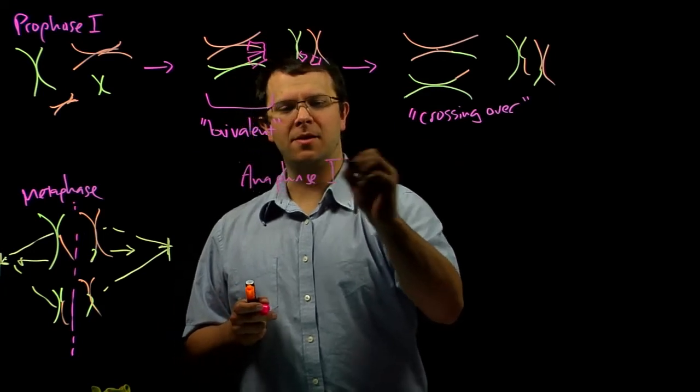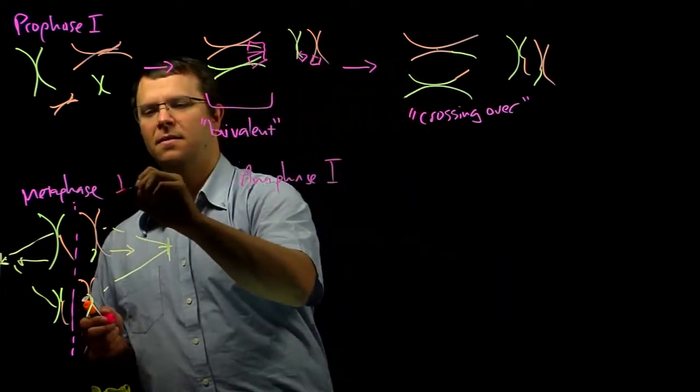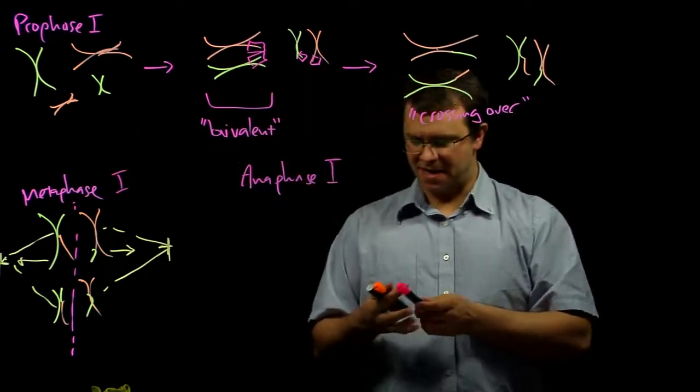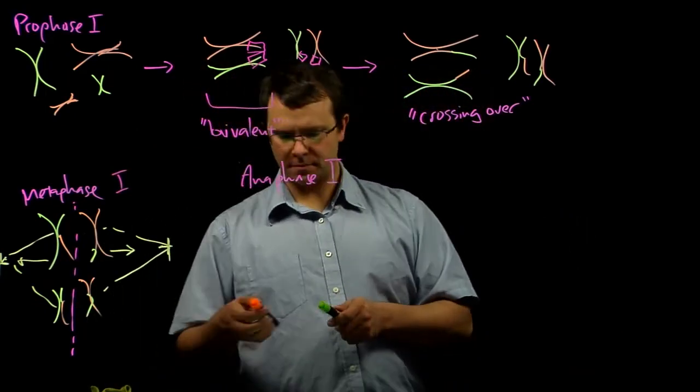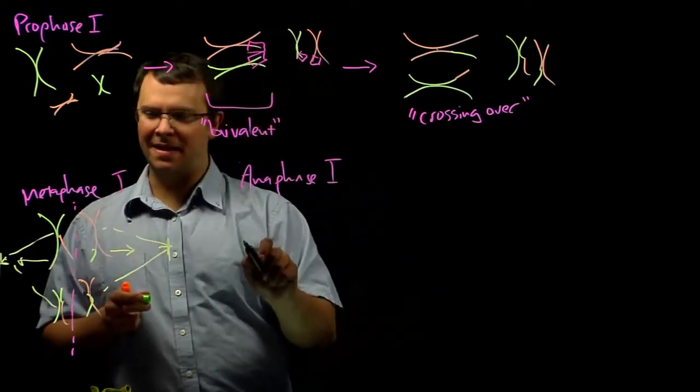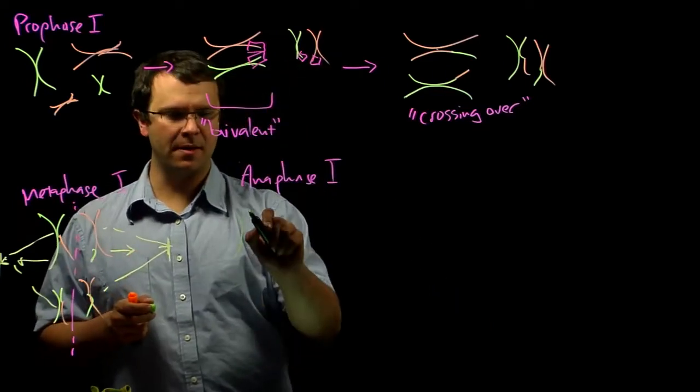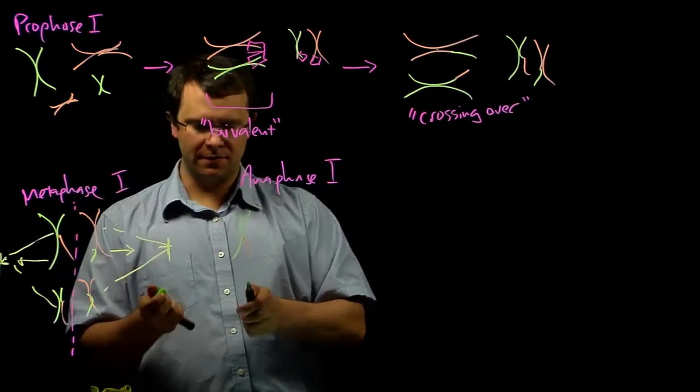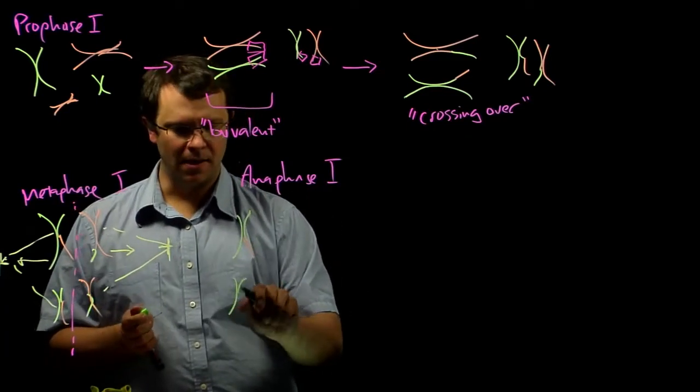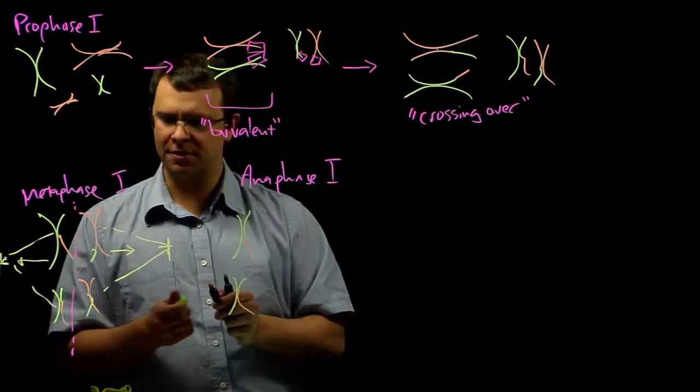It should be called anaphase one, just as this is called metaphase one. And so on one side of the cell, then we end up with one crossed over chromosome and another crossed over chromosome.